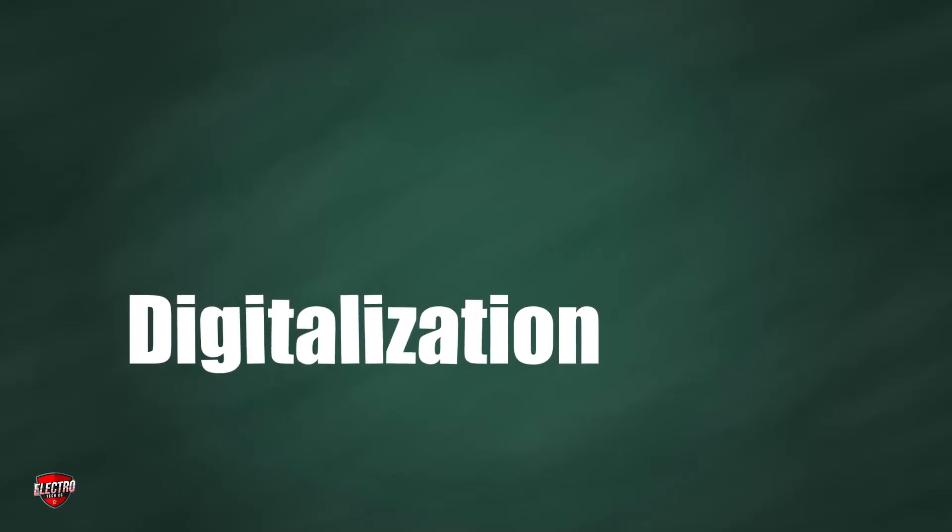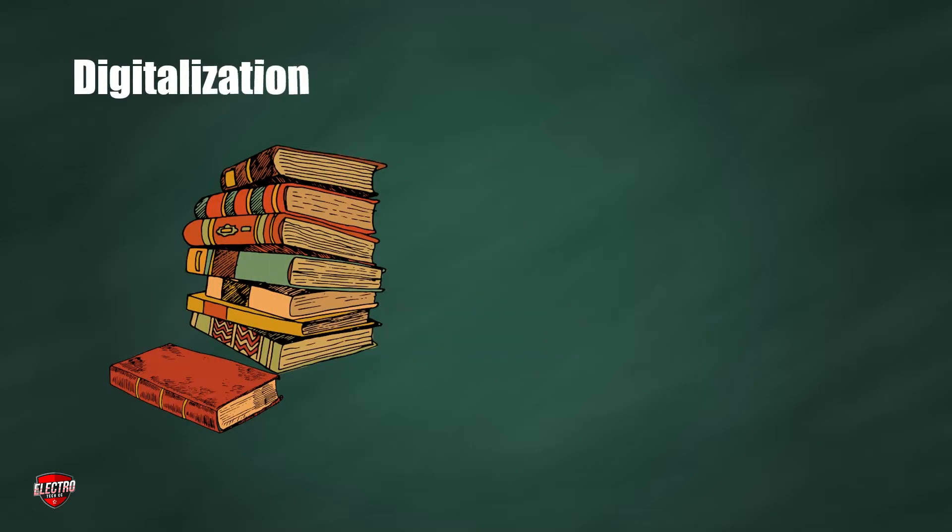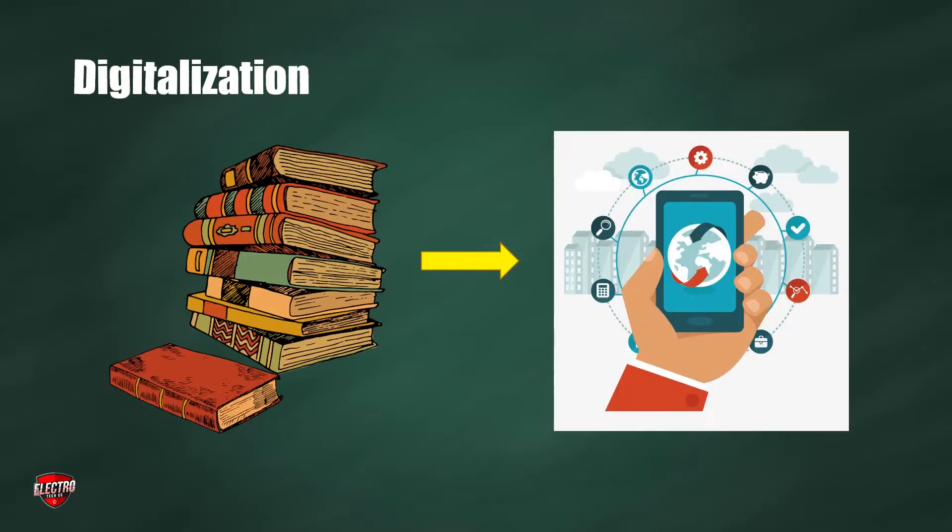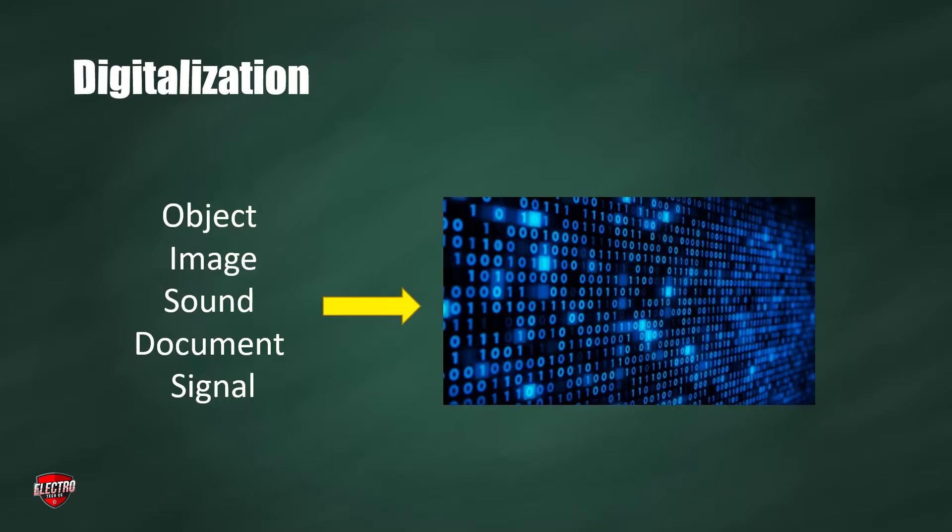So let us begin. Digitalization means the process of converting information into a digital format, that is computer readable format in which the information is organized into bits. The result is the representation of an object, image, sound, document, or a signal, usually an analog signal, by generating a series of numbers that describe a discrete set of points or samples.